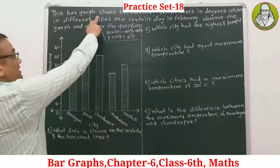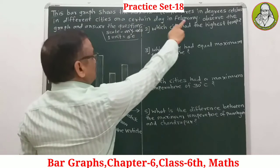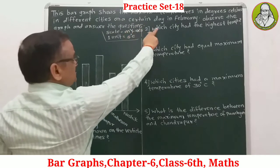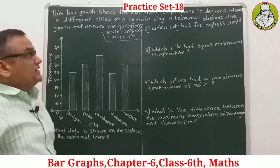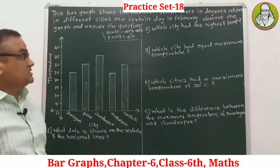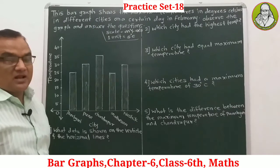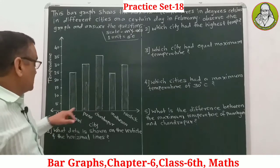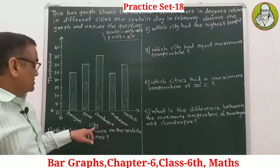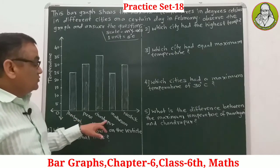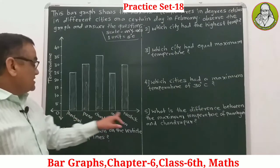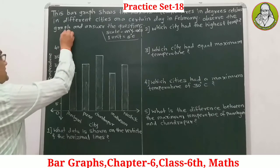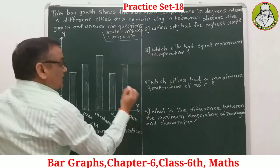This bar graph shows the maximum temperature in degrees Celsius in different cities on certain days in February. We have a y-axis and an x-axis on this graph.